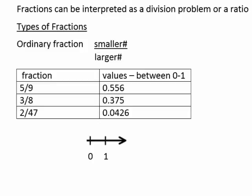I'll begin by introducing three types of fractions. First, there's the ordinary fraction, where we have a smaller number over a larger number. For example, 5/9, 3/8, 2/47. You can see smaller number over larger number.